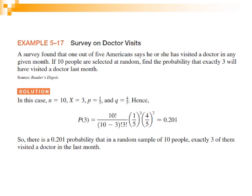Let's take an example. A survey found that one out of five Americans says he or she has visited a doctor in any given month. If 10 people are selected at random, find the probability that exactly three will have visited a doctor last month. We need to find the values required to calculate the binomial probability distribution.